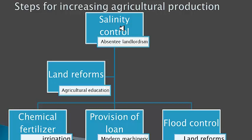The next issue is absentee land lordism. We have a very large area where absentee land lordism exists — where landlords own land but it is only in their name and is not cultivated, because these landlords do not need this land or its produce. Such areas — fields running into thousands of acres — can be reclaimed and corrected through land reforms.